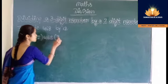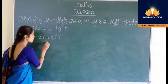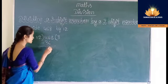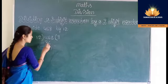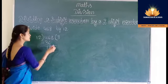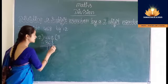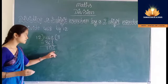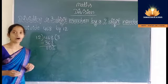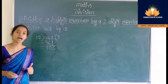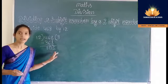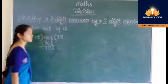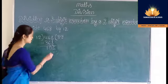Write 3 in place of the quotient. Then write the product 36 below this 46. Subtract: 6 minus 6 is 0, 4 minus 3 is 1. Then bring down the next number, that is 8. 108 is exactly divisible by 12 on 9: 12 nines are 108. Write 9 in place of the quotient. Then write the product 108.